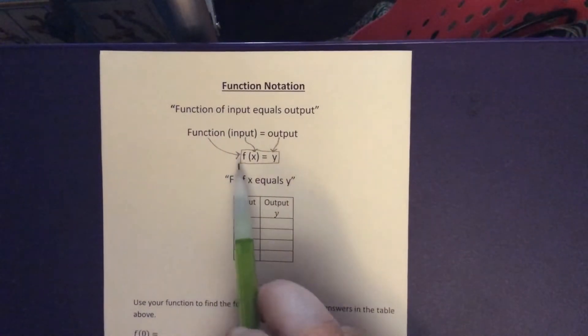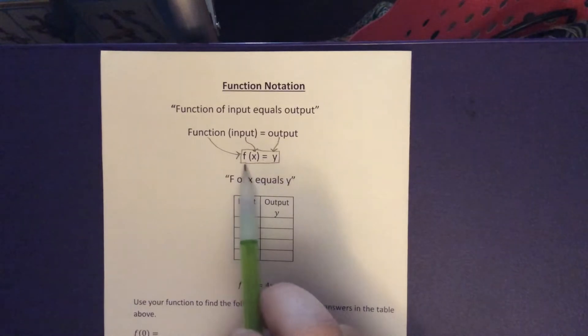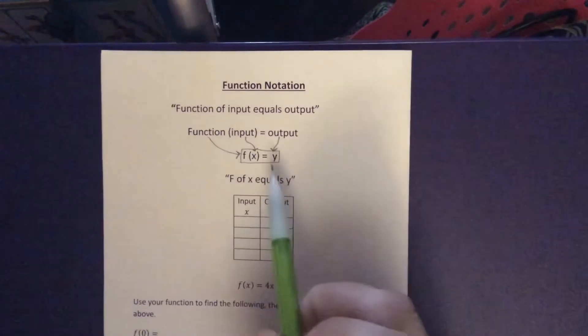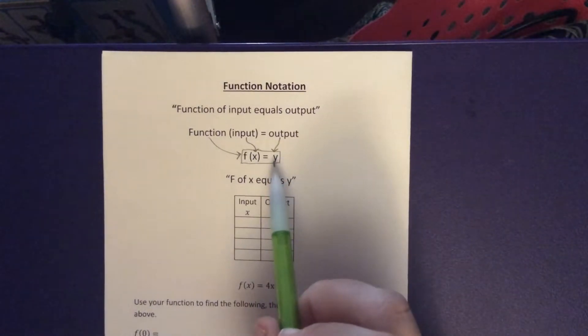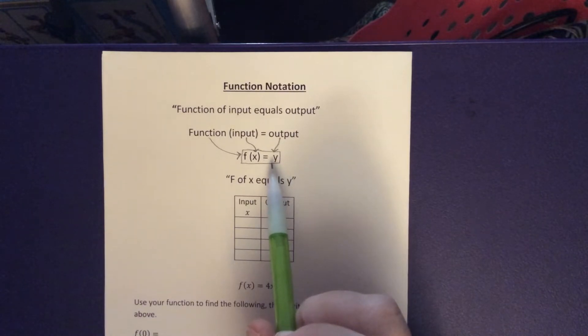If the function is f function, then we replace that here. Now a function could be named g or h or w or any letter that we want. So we would just replace that here and call it w of x equals whatever. So it doesn't necessarily mean that y is going to be the variable here, but this y over here means that whatever is on this side of the function is our actual relationship that we use x to determine the output.